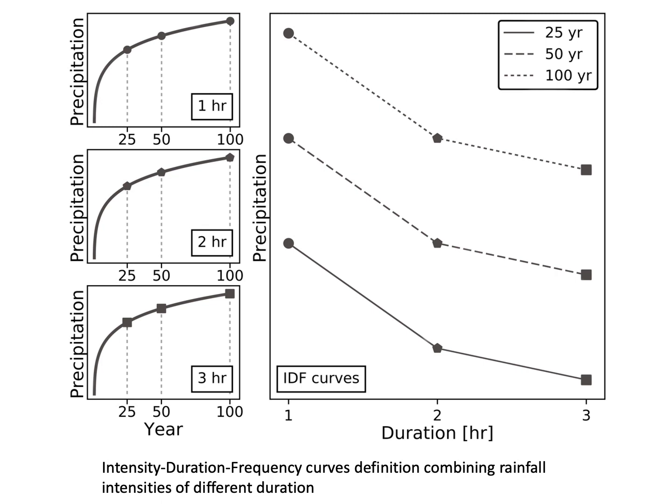First, a quick background. IDF curve analysis involves looking at different precipitation durations — hourly, six-hourly, daily, and more. For each duration, we extract extremes, usually annual maxima, to fit an extreme value distribution and generate figures like this. We have duration on one axis, intensity on another, and return period curves.